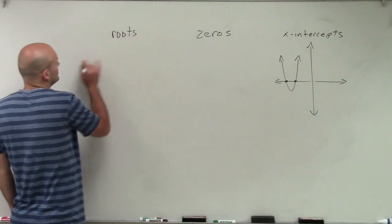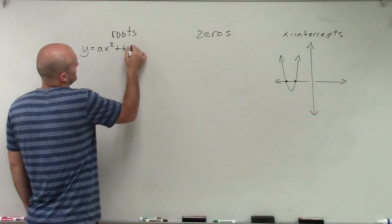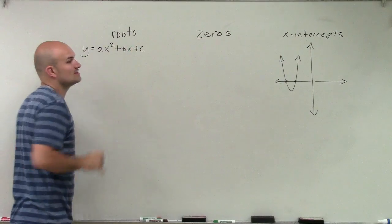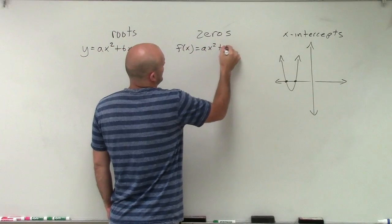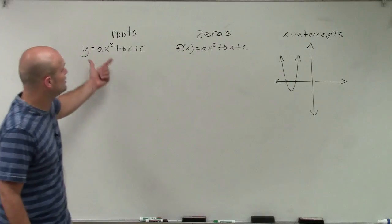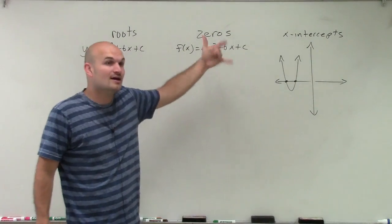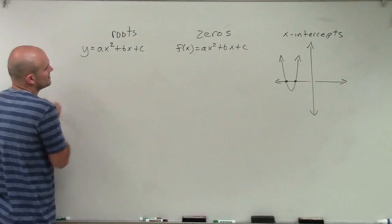Algebraically, when we're looking for the roots, we're looking at a quadratic equation. When we're talking about the zeros, we're primarily looking at a quadratic function. Remember what I went over in another video: the only difference between a quadratic equation and function is the function has to pass the function test, which we'll get to in a different series.